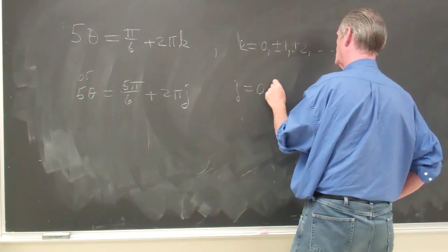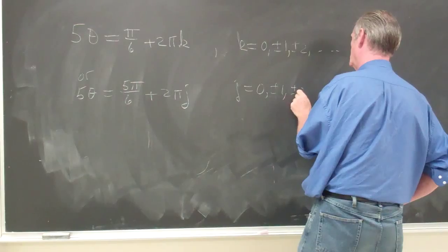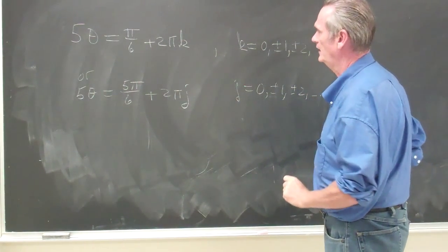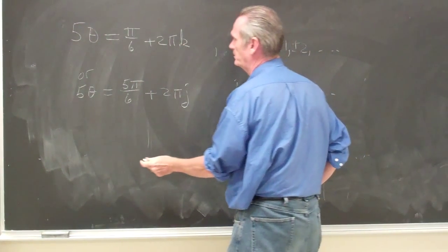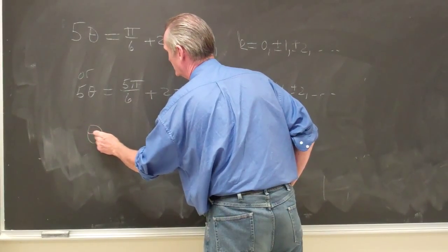And j is equal to plus or minus 1 plus or minus 2 and so forth. And then let's just divide through by 5 in the first equation.